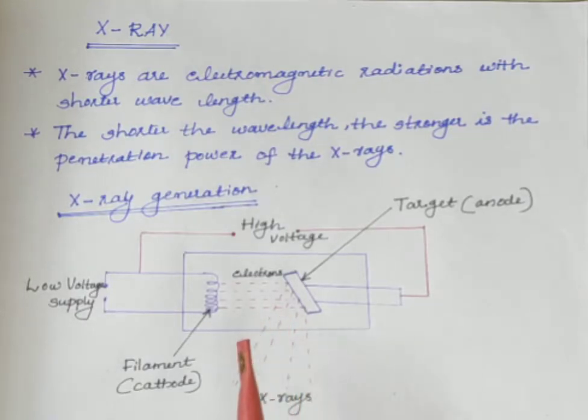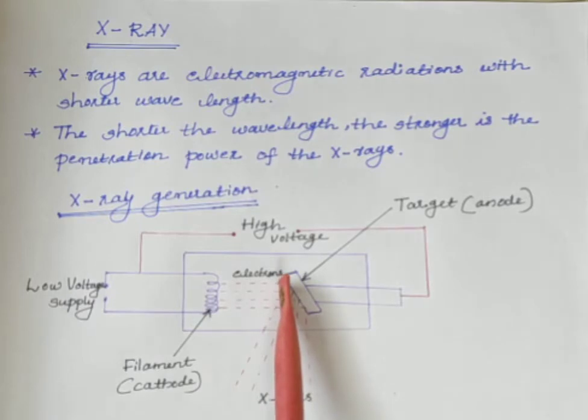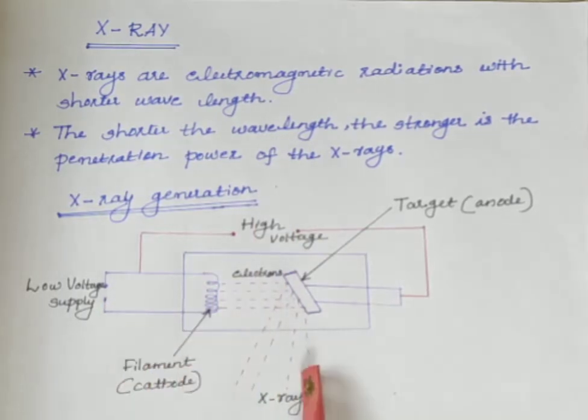Less than 1% of the kinetic energy of the electrons is converted into X-rays and the remaining 99% is released as heat. This is the basic working principle of X-ray generation.